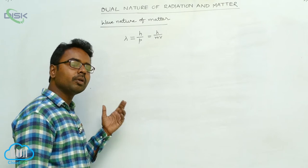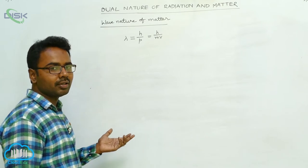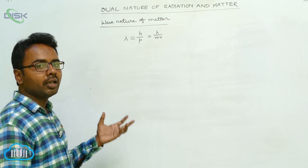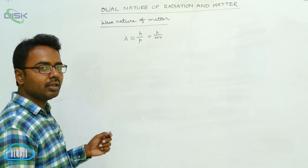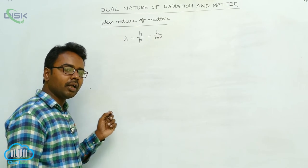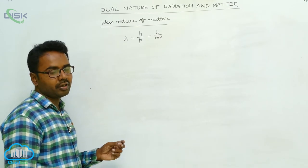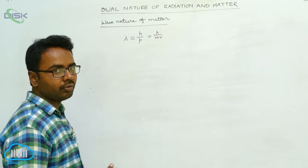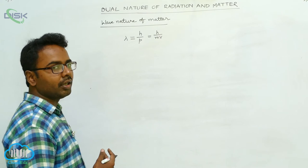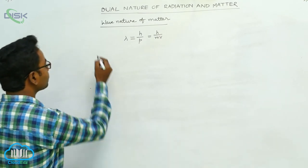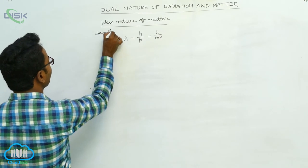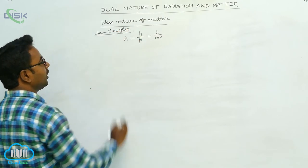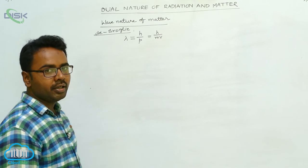As we studied in a previous lesson on atoms, the wave nature is exhibited by the electron when it orbits in a particular orbit. Elementary particles like electrons also exhibit wave nature. These waves are called matter waves, and for matter waves the wavelength is given by the de Broglie relation: lambda equals h by mv.